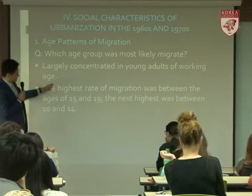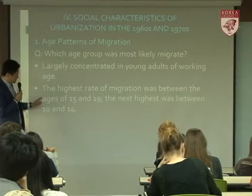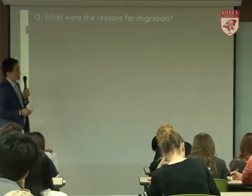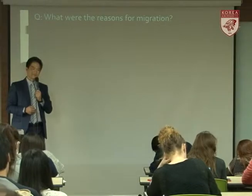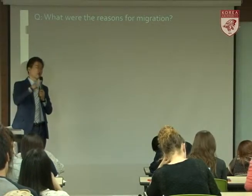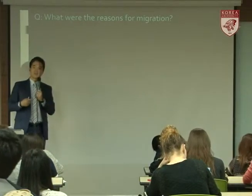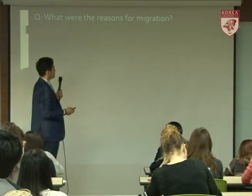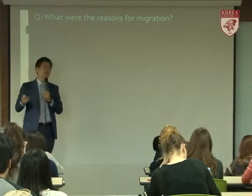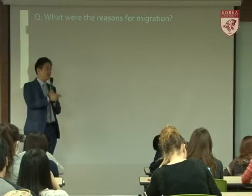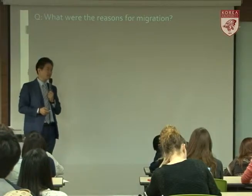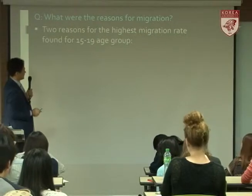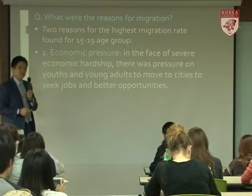Now let's understand why people in these age groups migrated. We have two top age groups: 15 to 19, and 10 to 14. Why did they migrate? For those 15 to 19, the answer is job opportunities. What about those aged 10 to 14? Education. Two reasons for the highest migration in the 15-to-19 group: economic pressure — to find jobs.